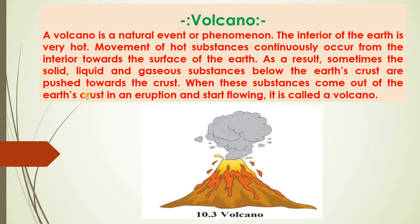Volcano — what is volcano? Ab volcano is a natural event or phenomenon. The interior of the earth is very hot. Movement of hard substances continuously occurs from the interior towards the surface of the earth. As a result, sometimes the solid, liquid, and gaseous substances below the earth's crust are pushed towards the crust. When these substances come out of the earth's crust in an eruption and start flowing, it is called a volcano.